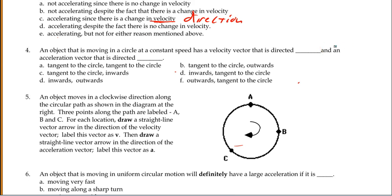Now, object moving a circle at constant speed has a velocity vector that is directed, and again, from our first work, the velocity vector is always directed tangent to the circle. And then the acceleration vector is always going to be 90 degrees to that and is going to point in the same direction as the centripetal force, centripetal, toward the center. So the velocity is tangent to the circle, and the acceleration vector is inwards toward the center of the circle. So the answer here would be C.